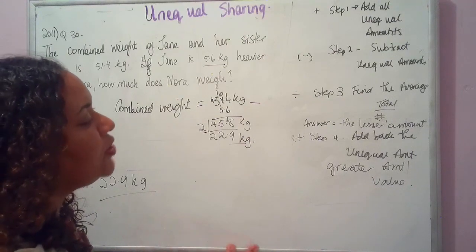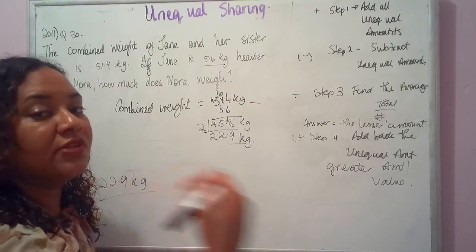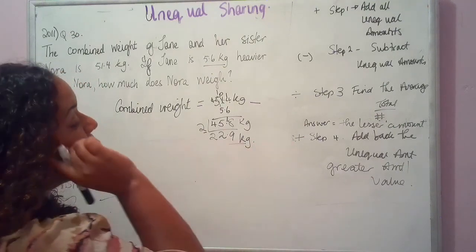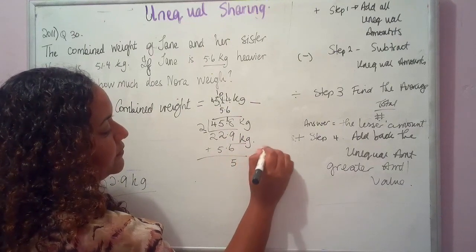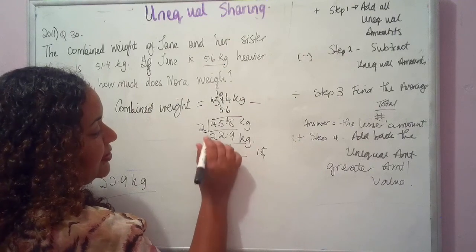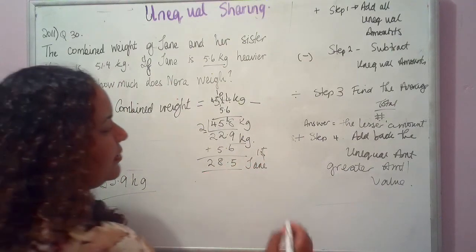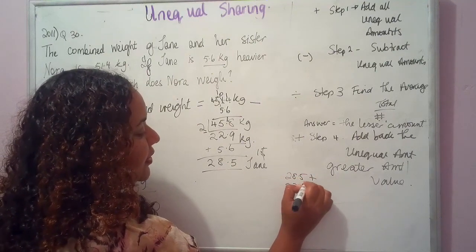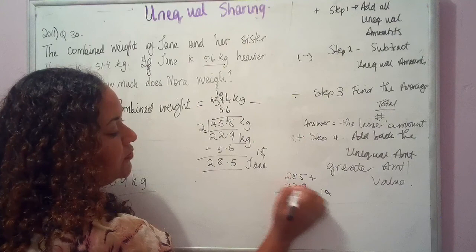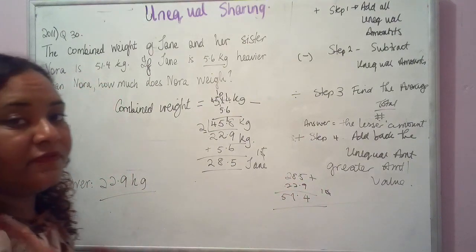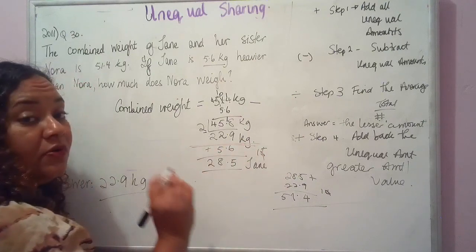Remember, whenever you're doing unequal sharing, if you want to double-check your answer, continue working it out. Step four: add back the unequal amount — 22.9 + 5.6 = 28.5 kilograms. So Jane weighs 28.5 kilograms. Let's verify: 28.5 + 22.9 = 51.4 kilograms. We get back to the original combined weight, confirming our answer. The sum stopped at step three when we found Nora's weight.